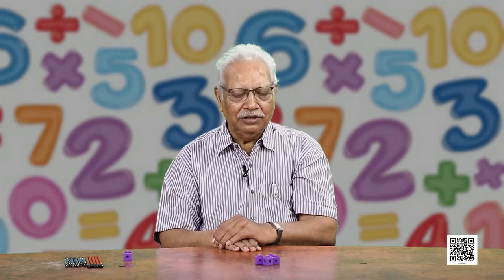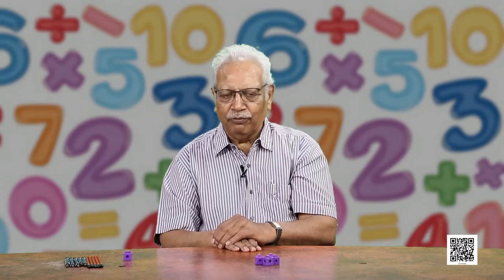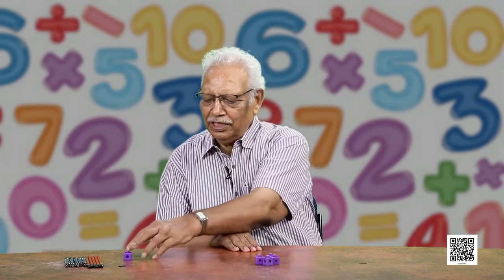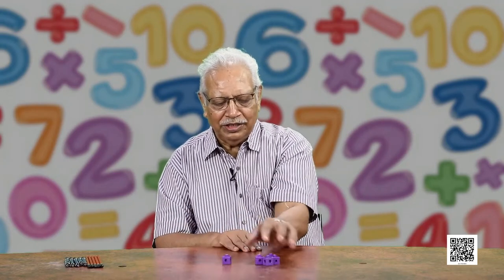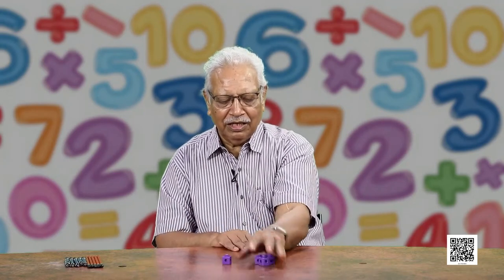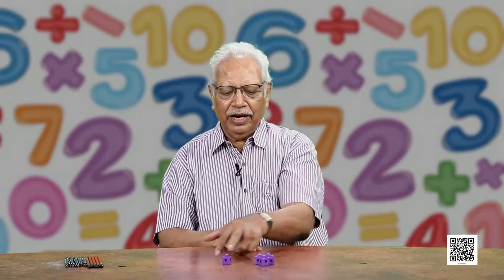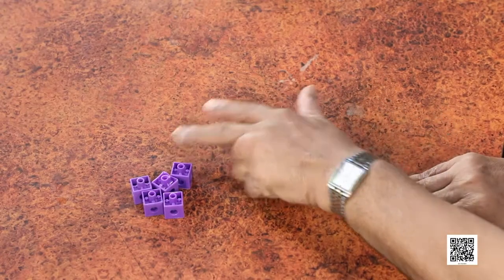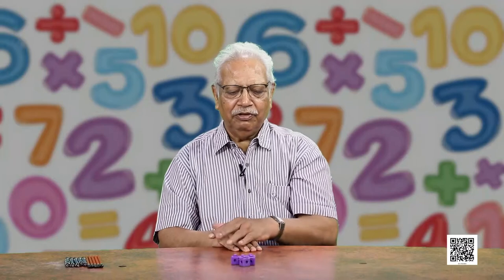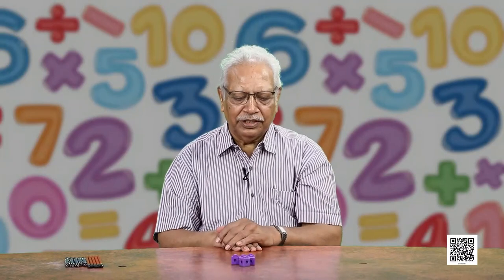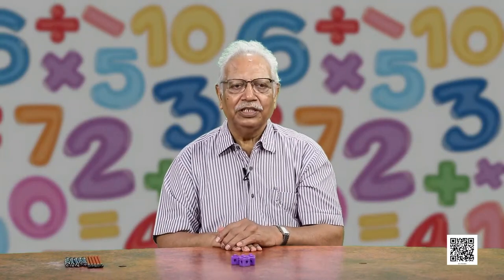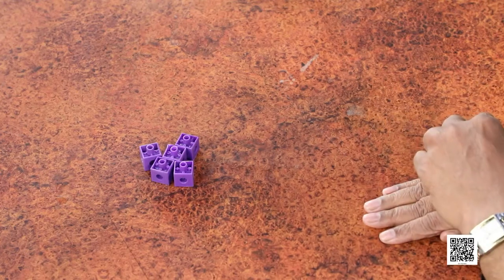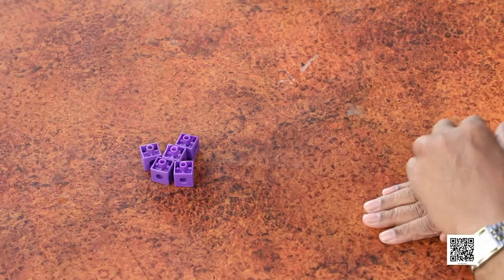So, 3 and 1 make 4. Similarly, 4 and 1 — how many do they make? We will put them together and see how many they are: 1, 2, 3, 4, 5. They are 5.